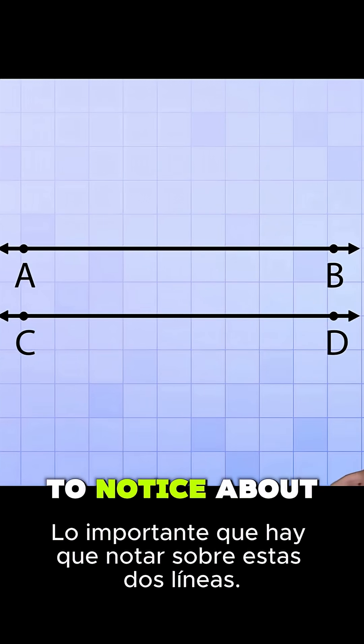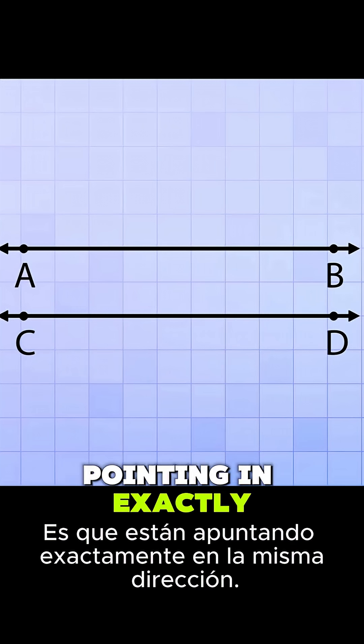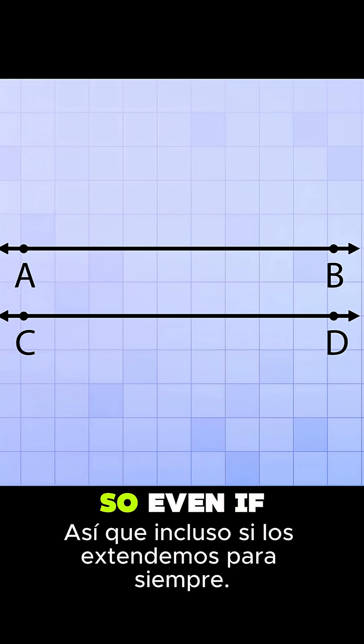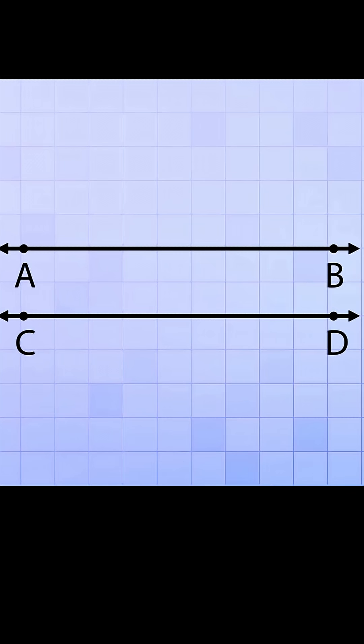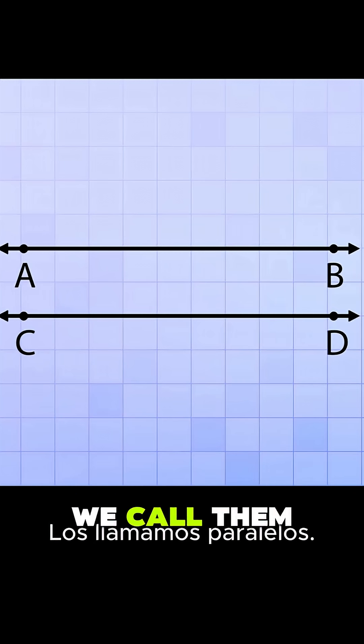Now the important thing to notice about these two lines is that they're pointing in exactly the same direction. So even if we extend them forever, they would never cross or even get closer together. When two lines are arranged like this, we call them parallel.